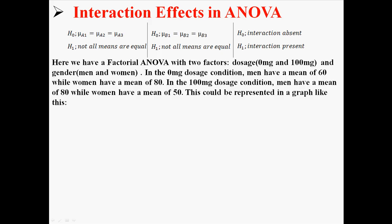So here's an interaction. Let's say we have a factorial ANOVA with two factors. We have dosage, and now we have gender, men and women. So in the 0mg dosage condition, men have a mean of 60, while women have a mean of 80. In the 100mg dosage condition, men have a mean of 80, while women have a mean of 50.